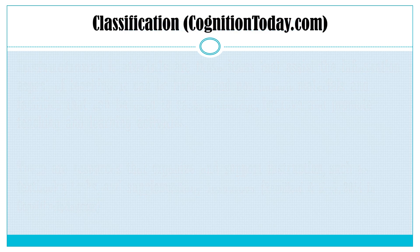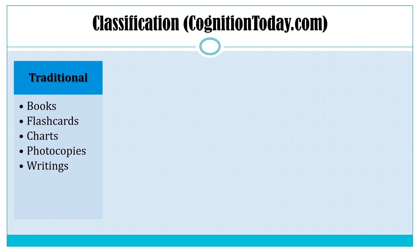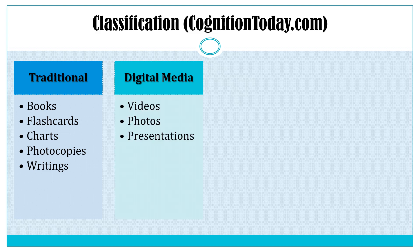According to cognitiontoday.com, there are four major classifications of instructional materials. First, we have the traditional or conventional materials. Some examples are books, flashcards, charts, photocopies of materials, and other writings. We also have digital media materials such as videos including short films that we can use to deliver our content, photos, and even slideshow presentations. These media are delivered using our laptops and projectors, televisions, or smart boards.